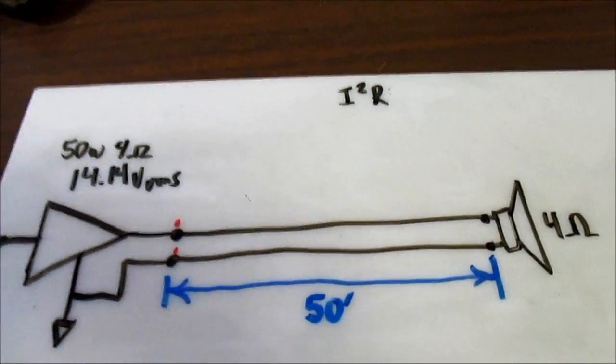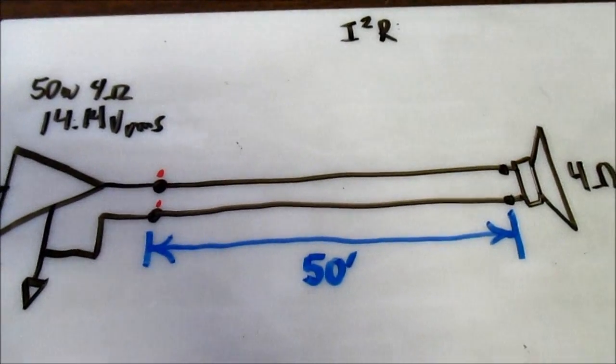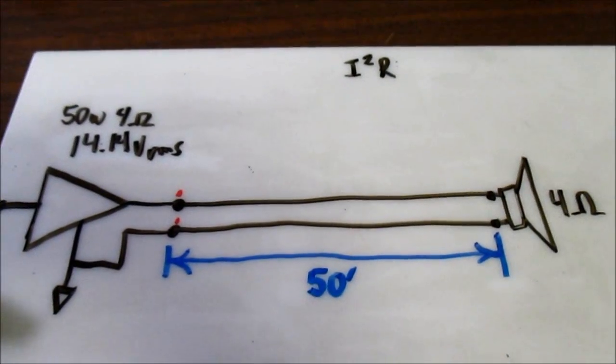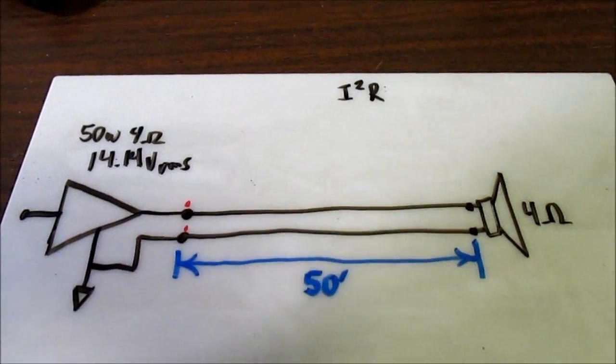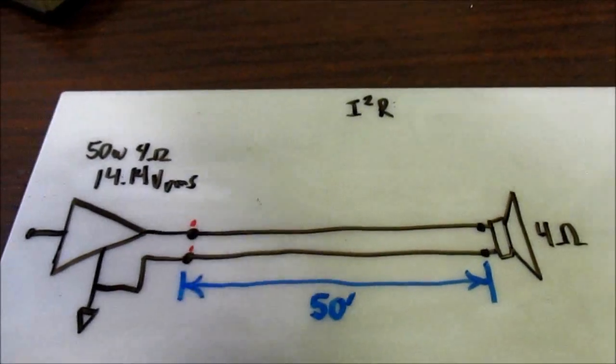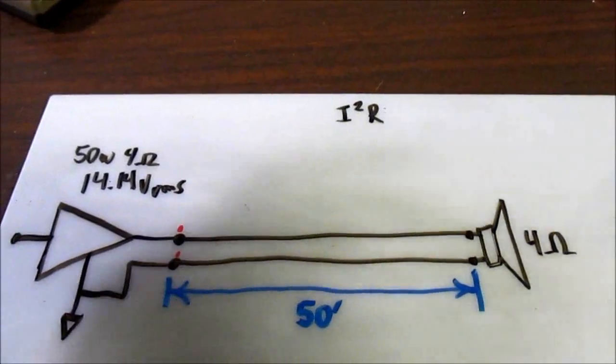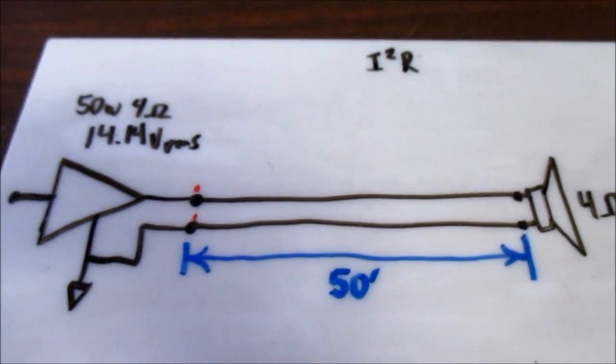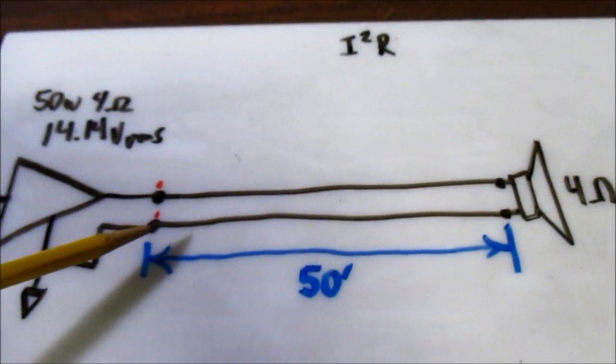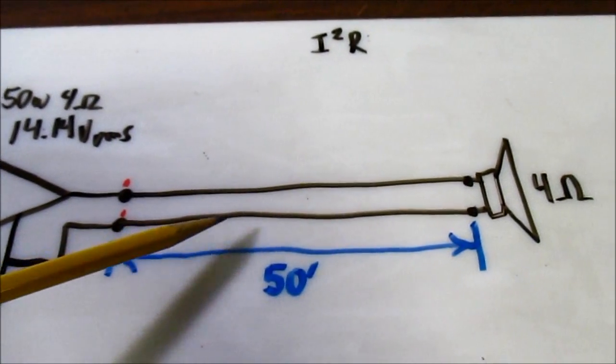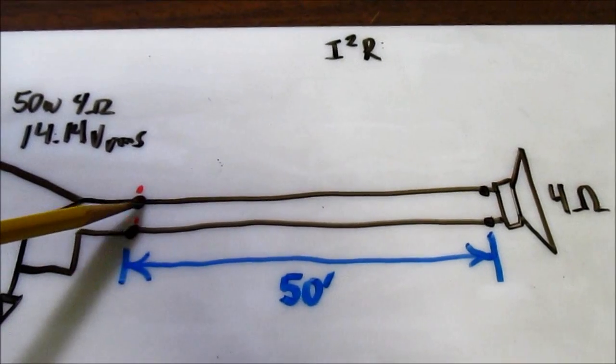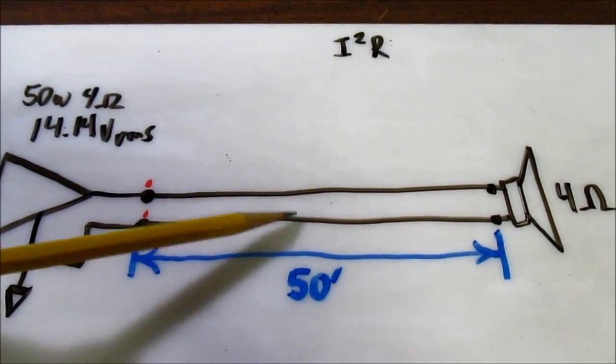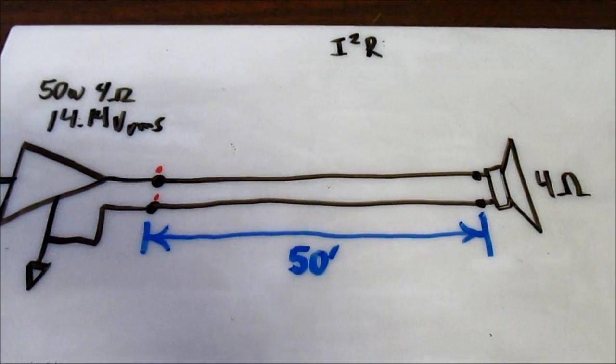Now we'll pretend we want to run a 50-foot cable. It doesn't take much to use up 50 feet when you're running speaker cable. When you run it around, you have to go over, above in the ceiling and up and down along the walls, eat that up pretty quick. And you have to consider when you're running cable, you're going out the distance and coming back. So it's actually 100 feet of conductor that's being used.